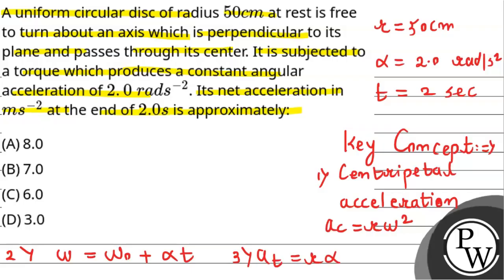First we'll find tangential acceleration. At equals r into alpha. This will be equal to 50 into 10 to the power minus 2, multiply by angular acceleration 2. So it will come out equal to 1 meter per second square.